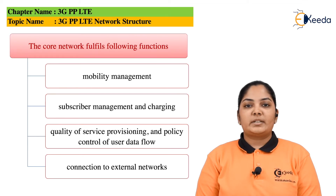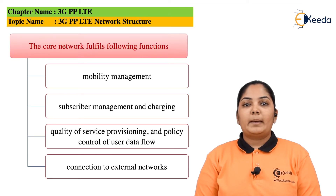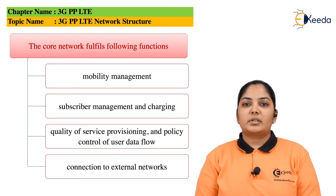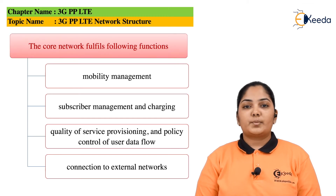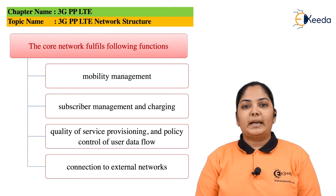The MME, that is the Mobility Management Entity, plays an important role in LTE architecture. MME is the main signaling node in the EPC. The LTE MME is responsible for initiating paging and authentication of the mobile device. The MME also retains the location information of the device at the tracking area level for each user and selects the appropriate gateway during the initial registration process. The main function of the Serving Gateway is routing and forwarding user data packets. It is also responsible for E-NodeB handovers in the user plane and provides mobility management between LTE and other types of networks such as 2G and 3G.